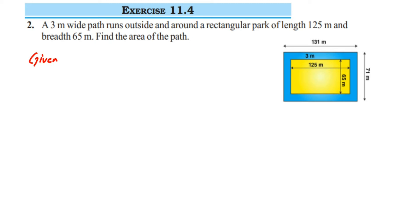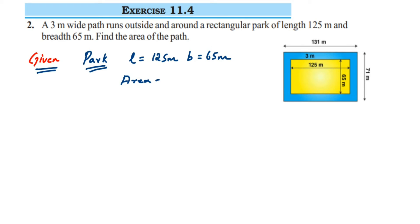Now let us find the areas. For the park: length is 125 meter and breadth is 65 meter. The shape is a rectangle, so area equals length into breadth, which is 125 multiplied by 65. When you multiply 125 and 65, you get 8125 meter square.